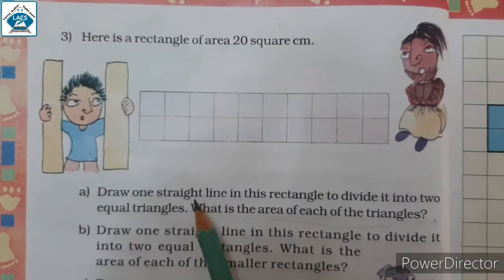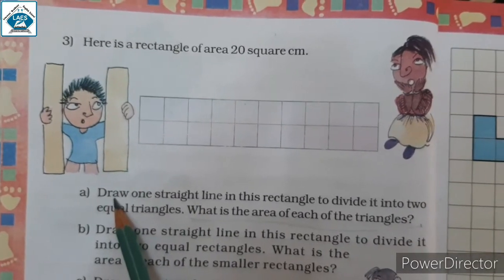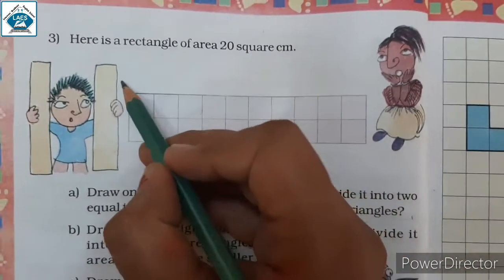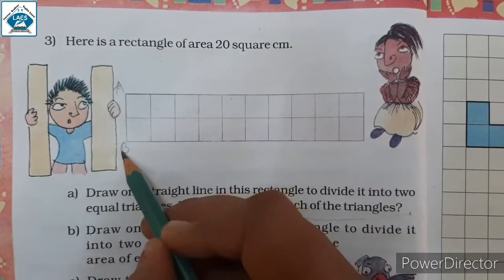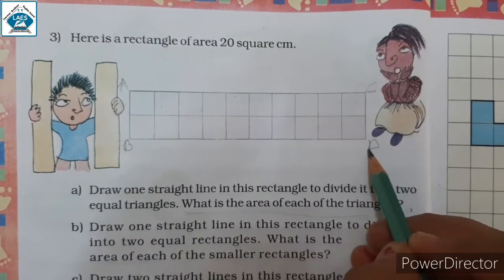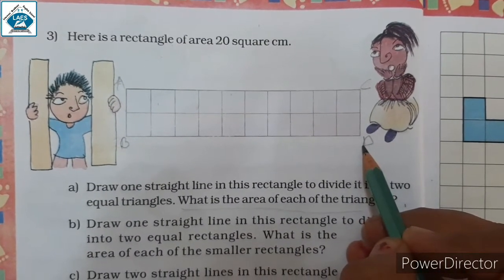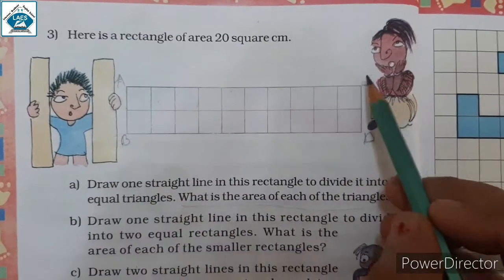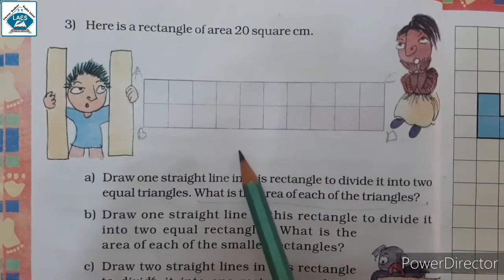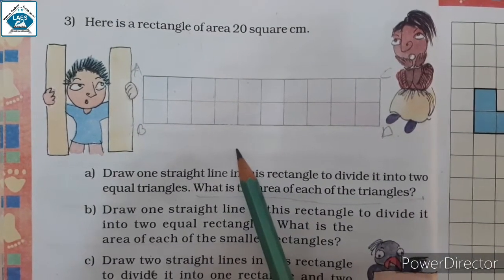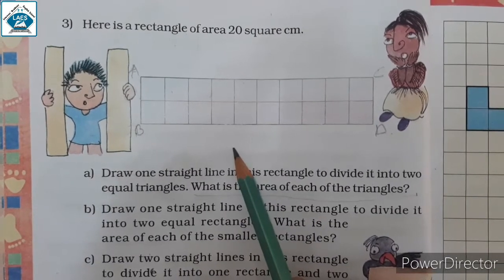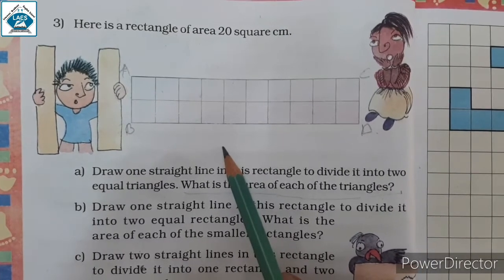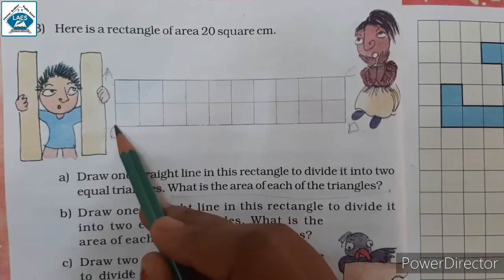How will you draw it? Watch it properly to draw it. Let's name the vertex A, B, C and D. You have to match A to D and B to C by drawing a straight line, and to draw a straight line you can use a scale. I am just trying to draw a straight line from point B to C.